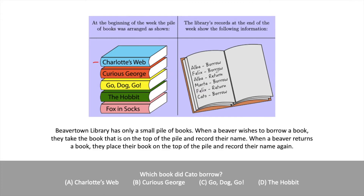Now Alba returns the book she borrowed — Charlotte's Web. So Curious George is the only book that's been borrowed, but Charlotte's Web, Go Dog Go, The Hobbit, and Fox and Socks are in the stack. Now Marta borrows a book, and the book on top — because it was last returned — is Charlotte's Web. So Charlotte's Web and Curious George are now borrowed, and the top book is Go Dog Go.